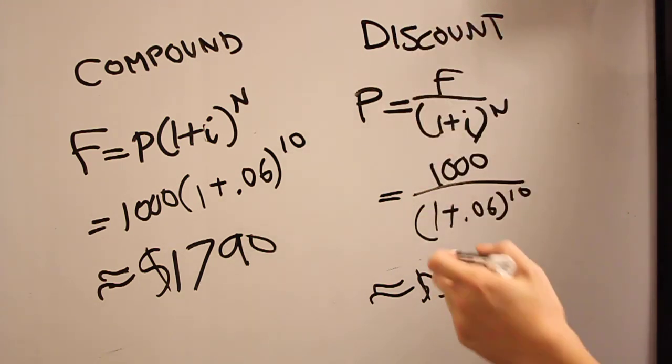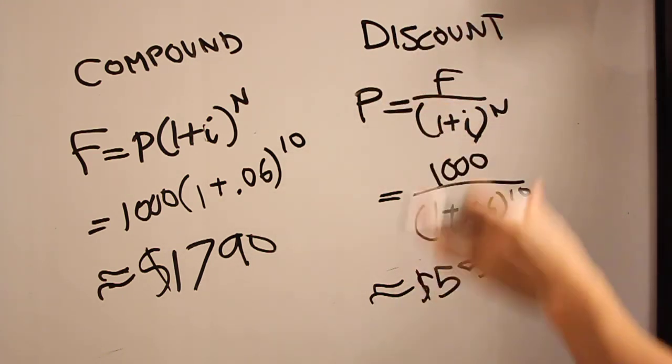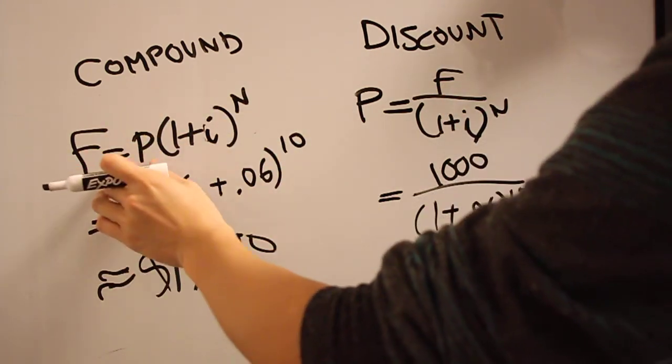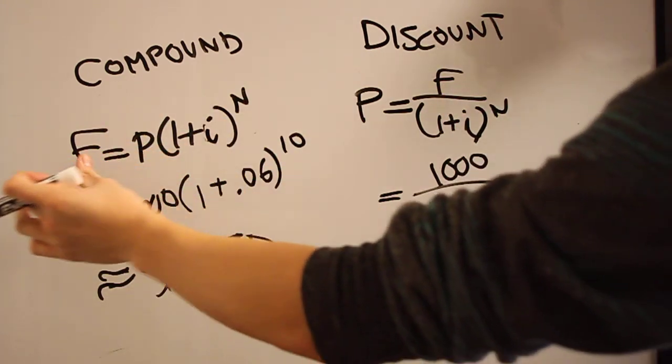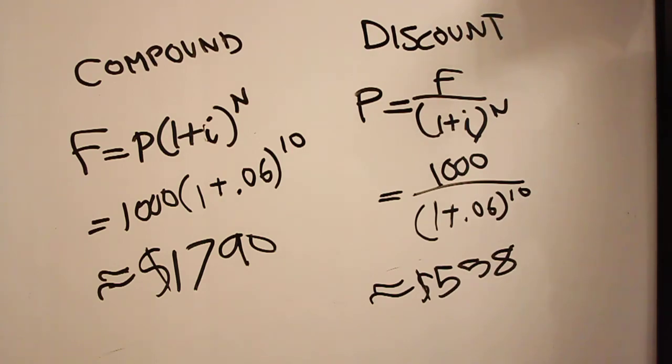Always remember that discount, you're going to have less value, less than F. And for compounding, you're going to reach a value greater than P.